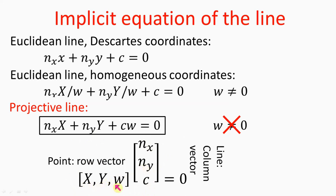This equation can be imagined as a 3D dot product between the homogeneous coordinates (X, Y, W) of points on the line, and the three line parameters (nx, ny, c) — the normal vector components and distance from origin. Note the nice symmetry: (X, Y, W) are homogeneous coordinates that can be multiplied by any scalar. Similarly, (nx, ny, c) are parameters of the line with the same homogeneous property — multiplying both sides of the equation by any non-zero scalar doesn't change the solution set. A line can be specified by parameters that differ only by a scaling factor.